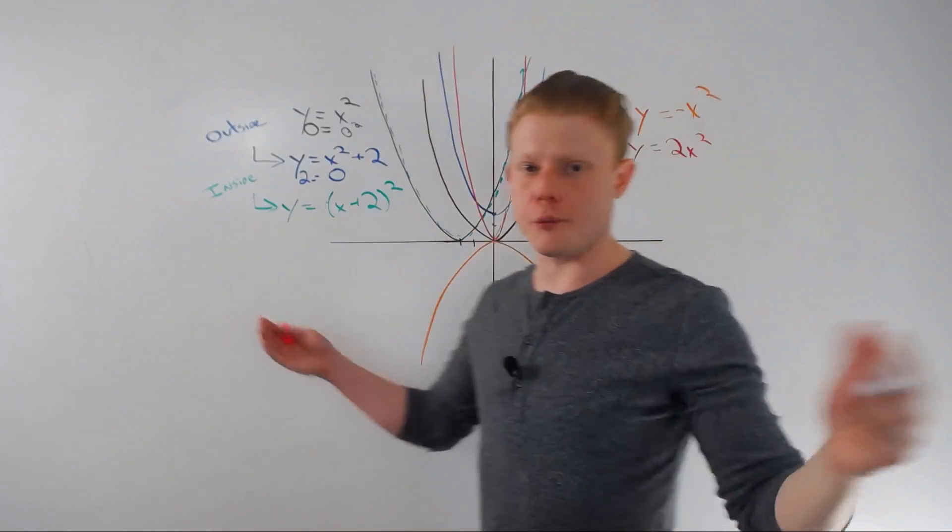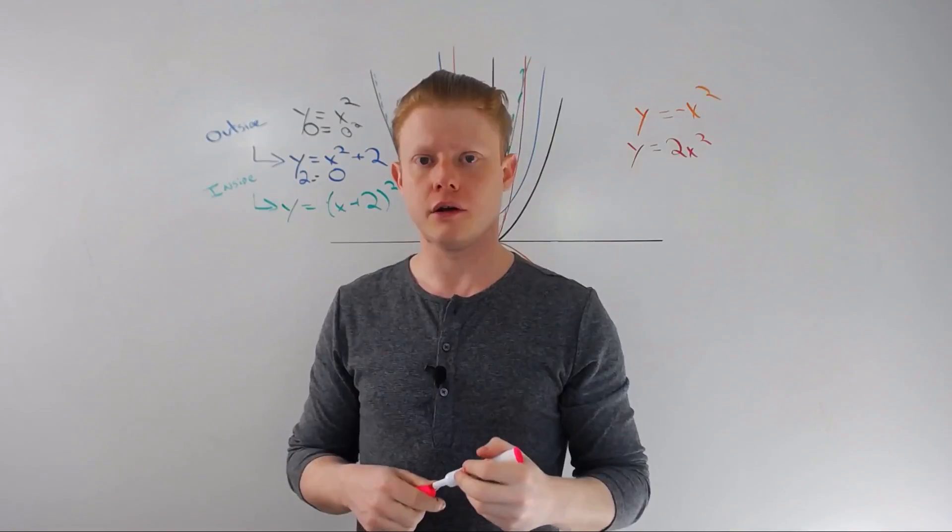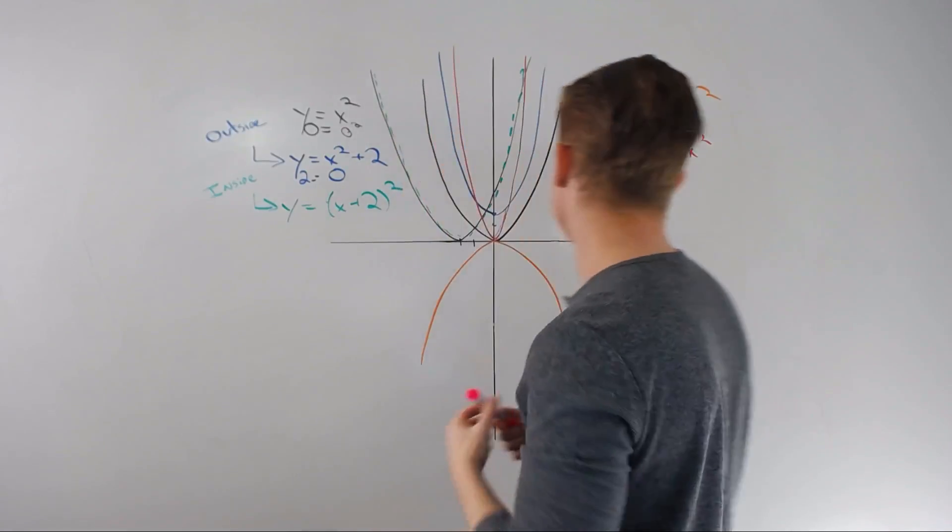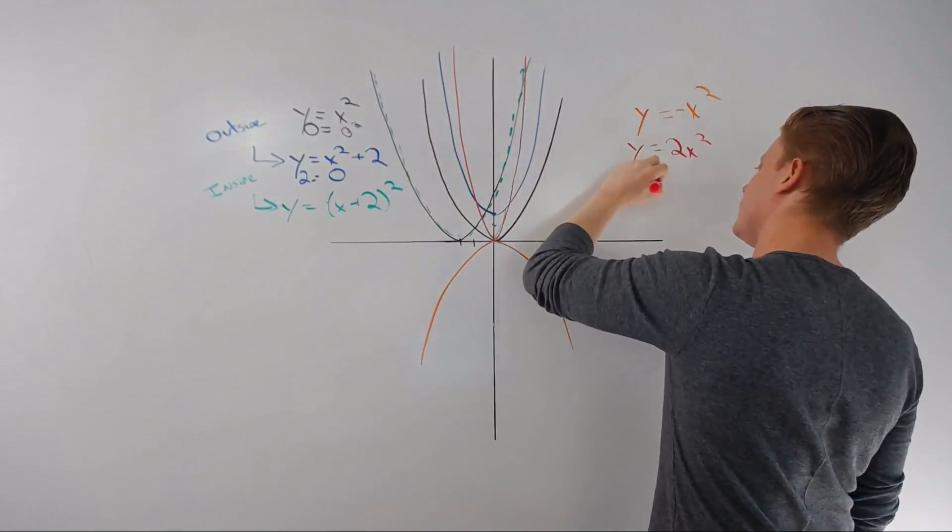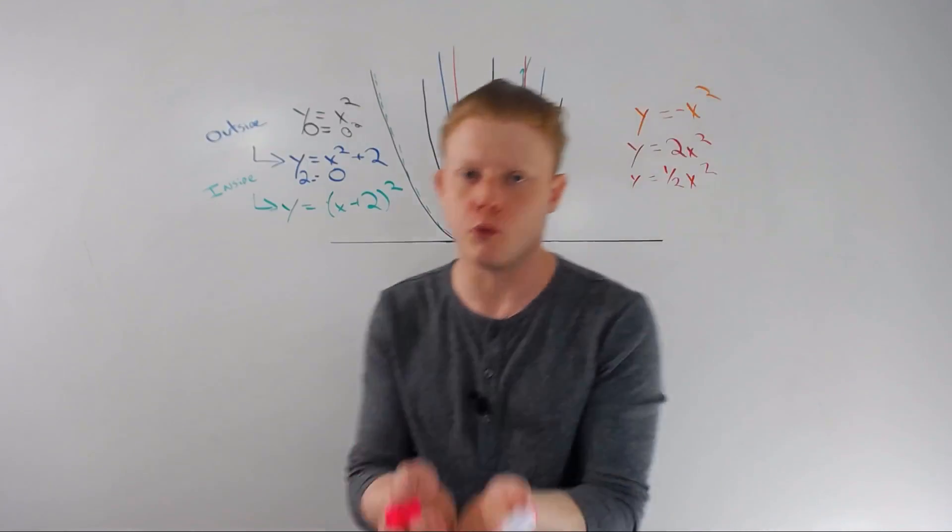So it's going to be much steeper. It's going to turn from like a cup looking sort of thing to more of a knife blade. If I have a coefficient that's under one, let's say y equals one half x squared, then the opposite will happen. It'll turn into more of a gentle bowl sort of shape.